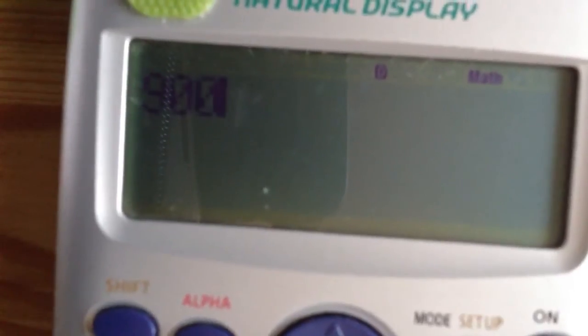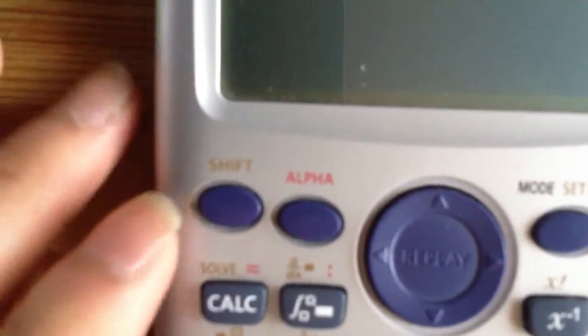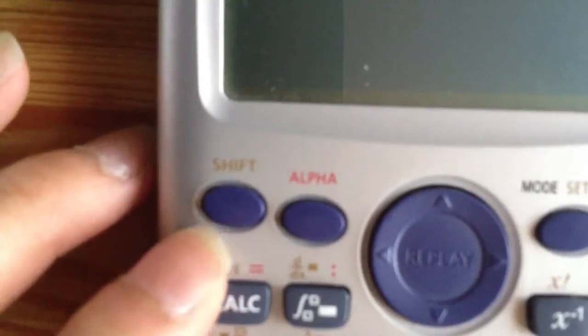We have the calculator and we type it in. 900, you should be able to do. There's an equal sign, so that's shift calc. No, it's alpha calc.